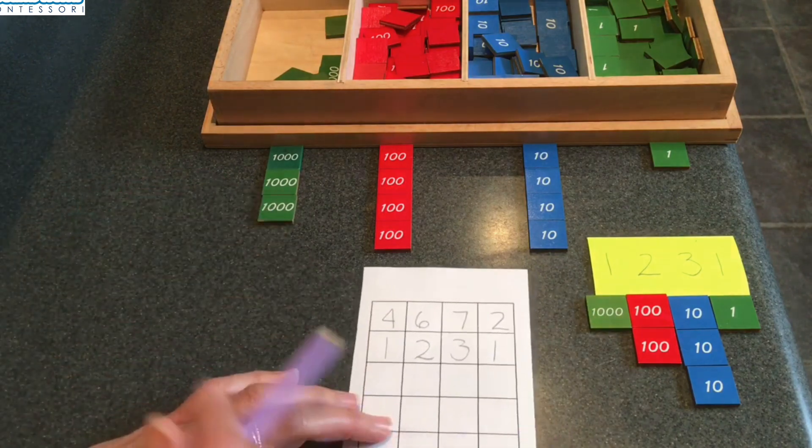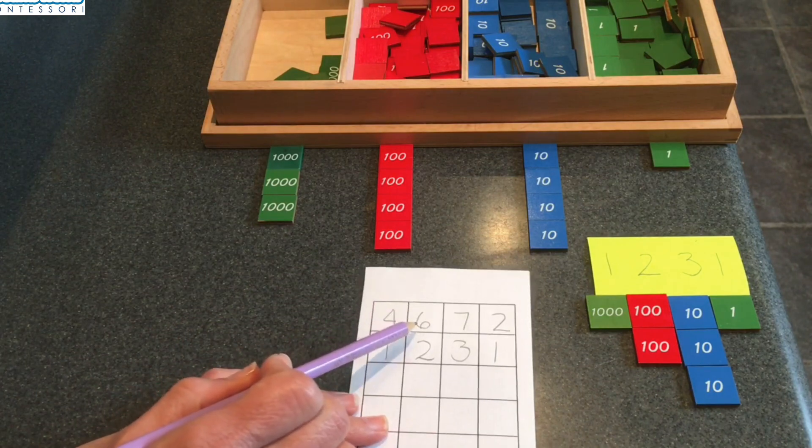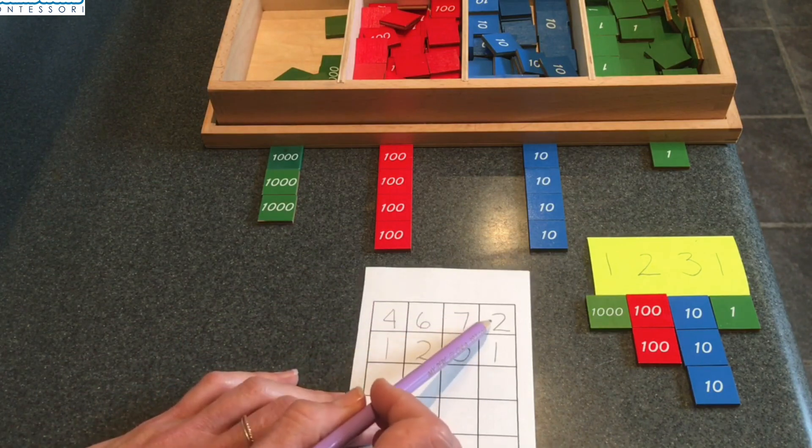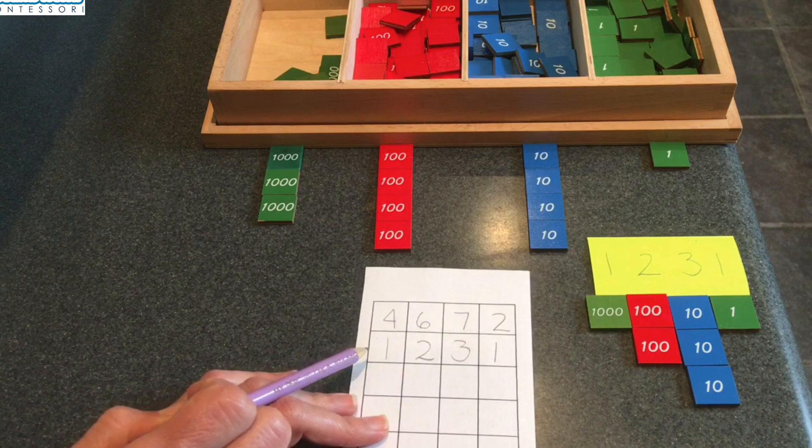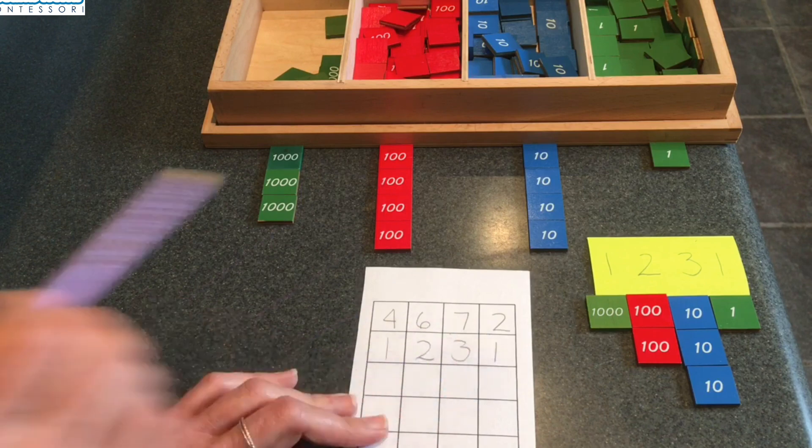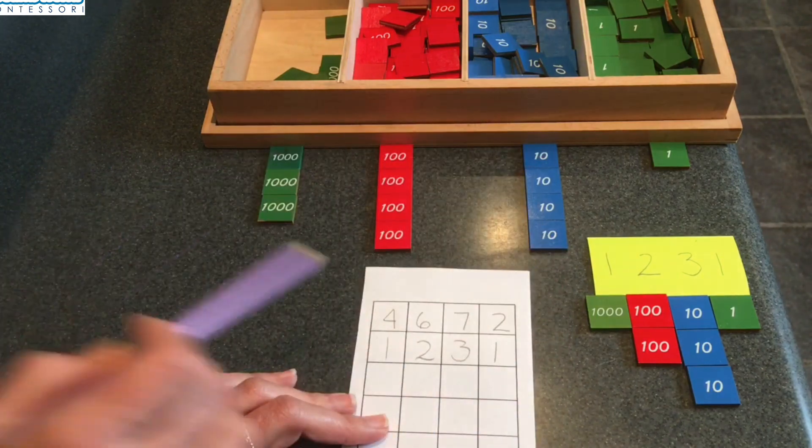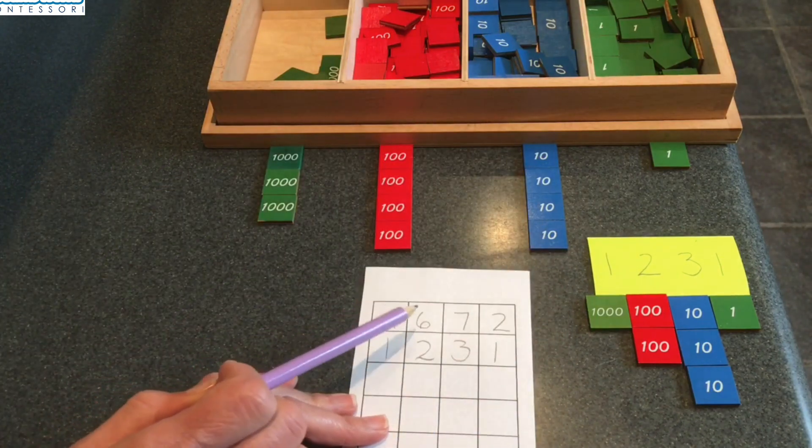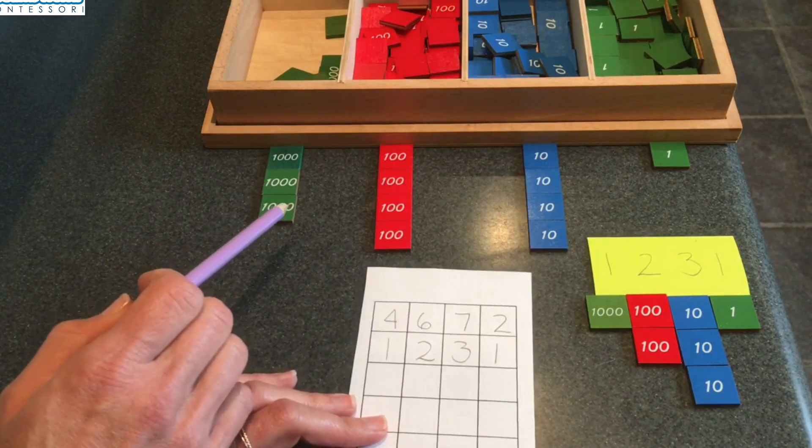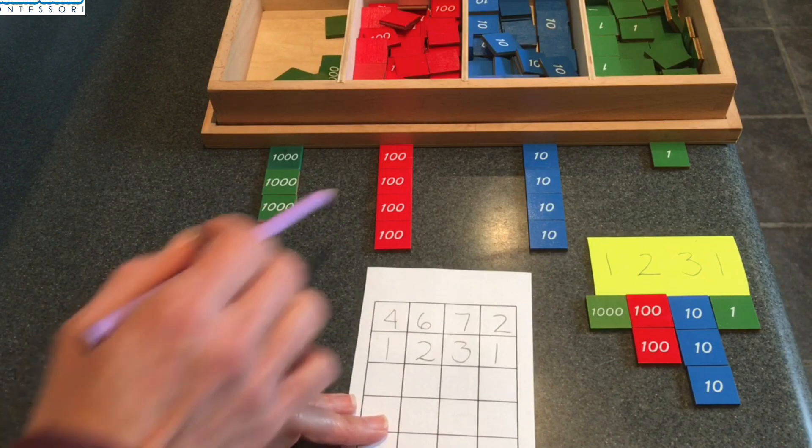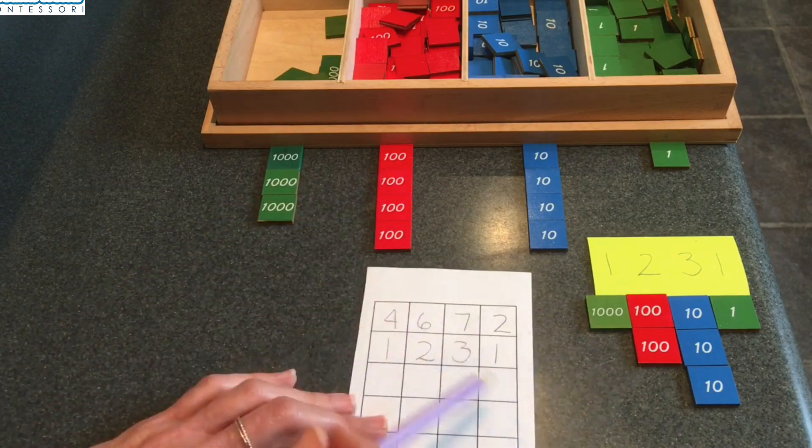I had 4,672 and I took away 1,231. You did it too, I hope. Let's see what's left. This number is no longer 4,672. Let's see what we have left now that we've taken this away.